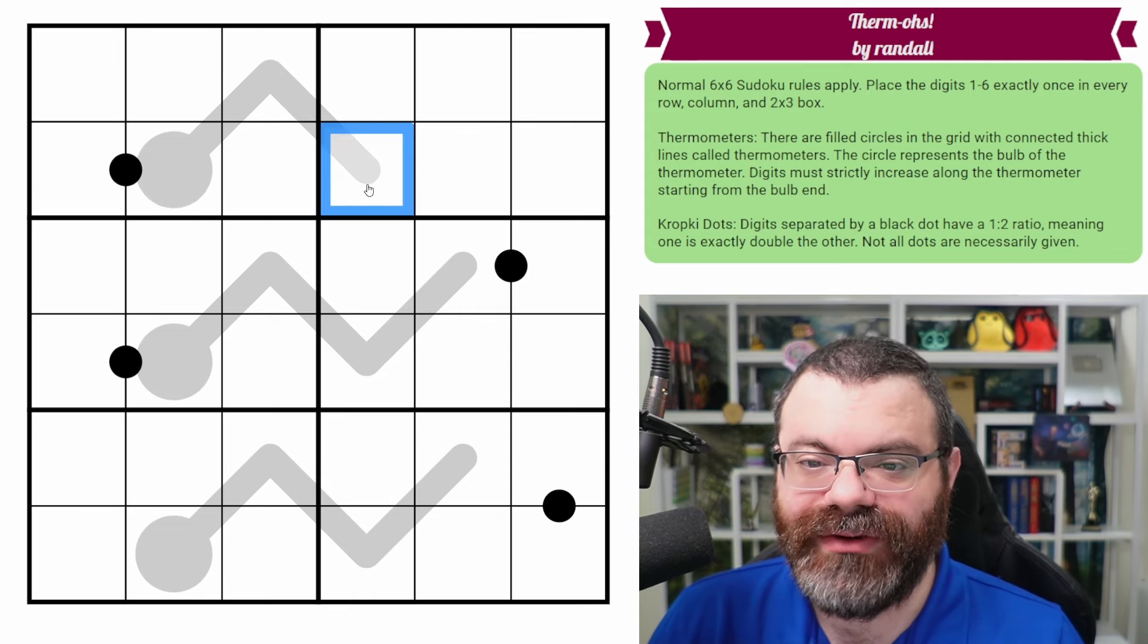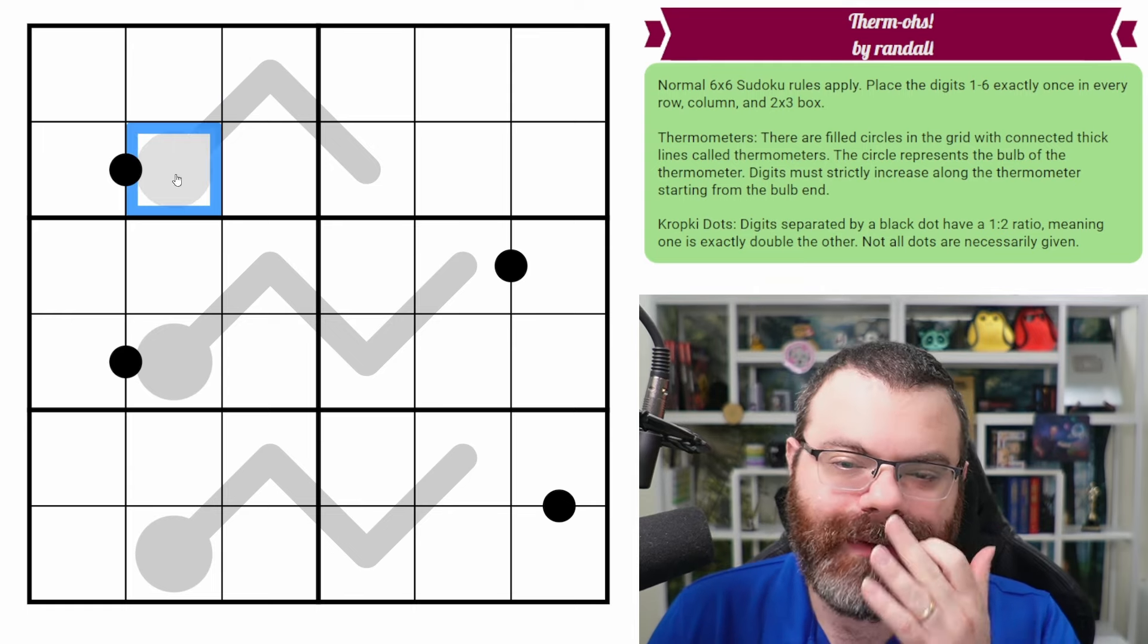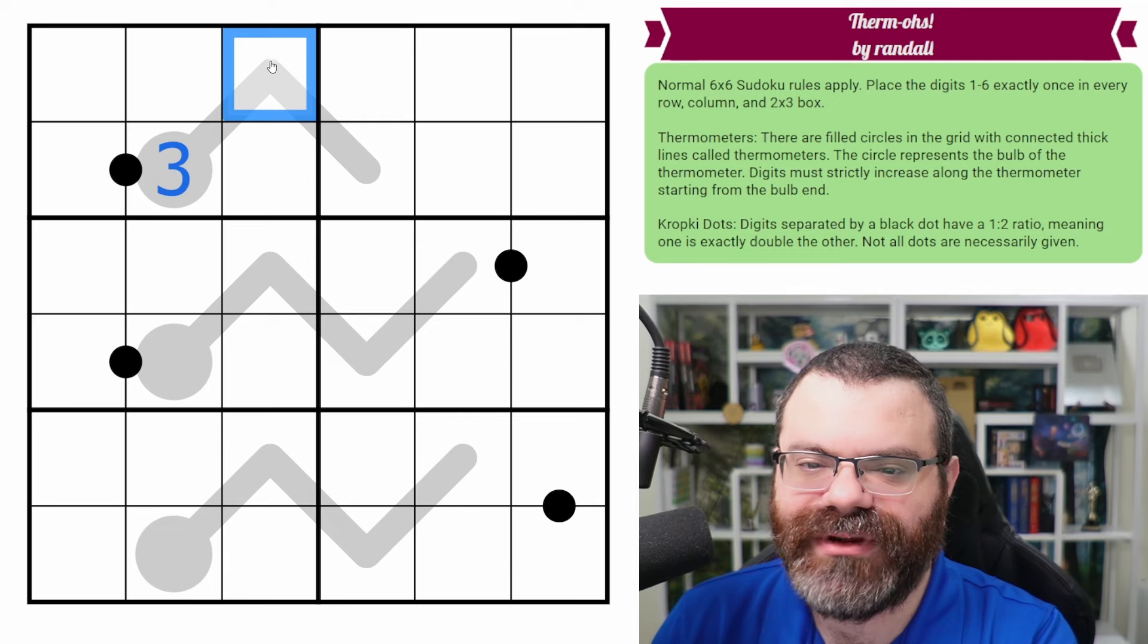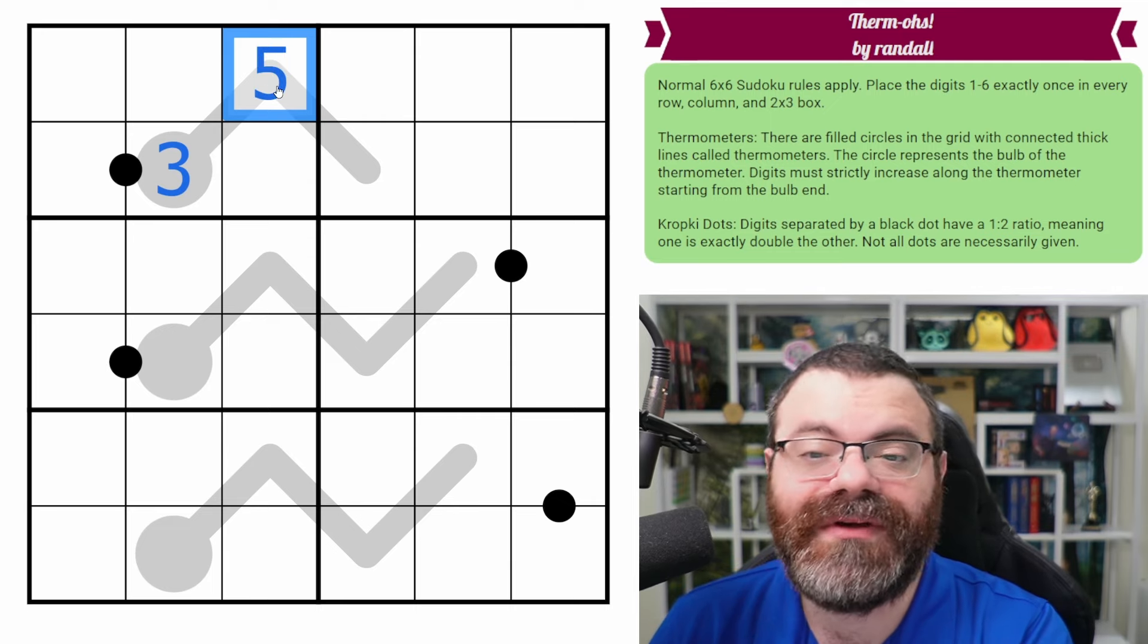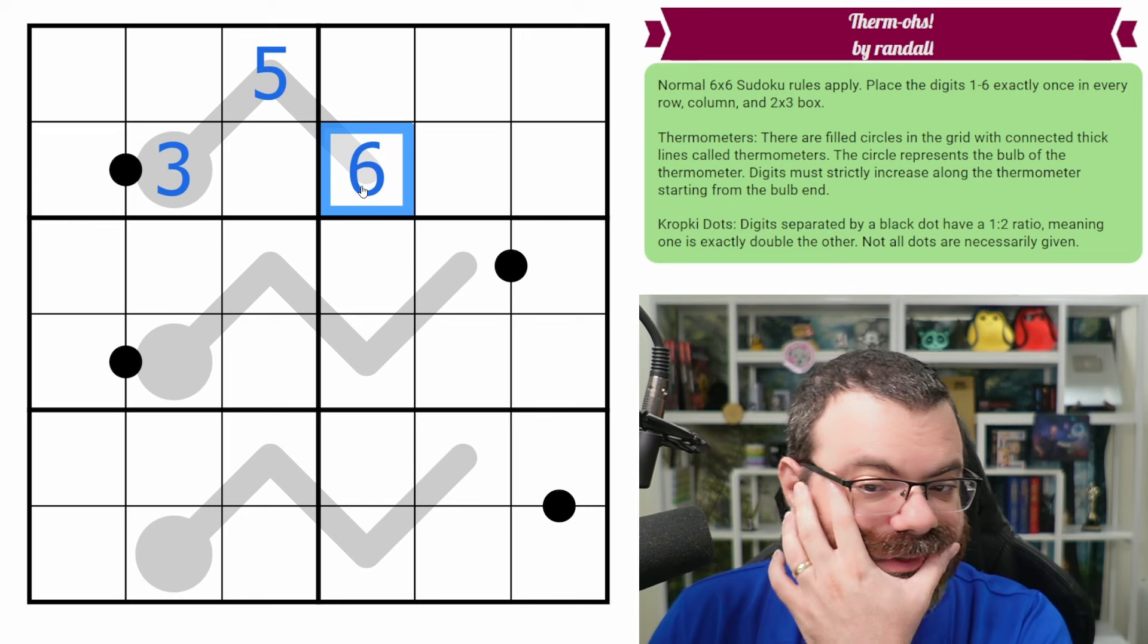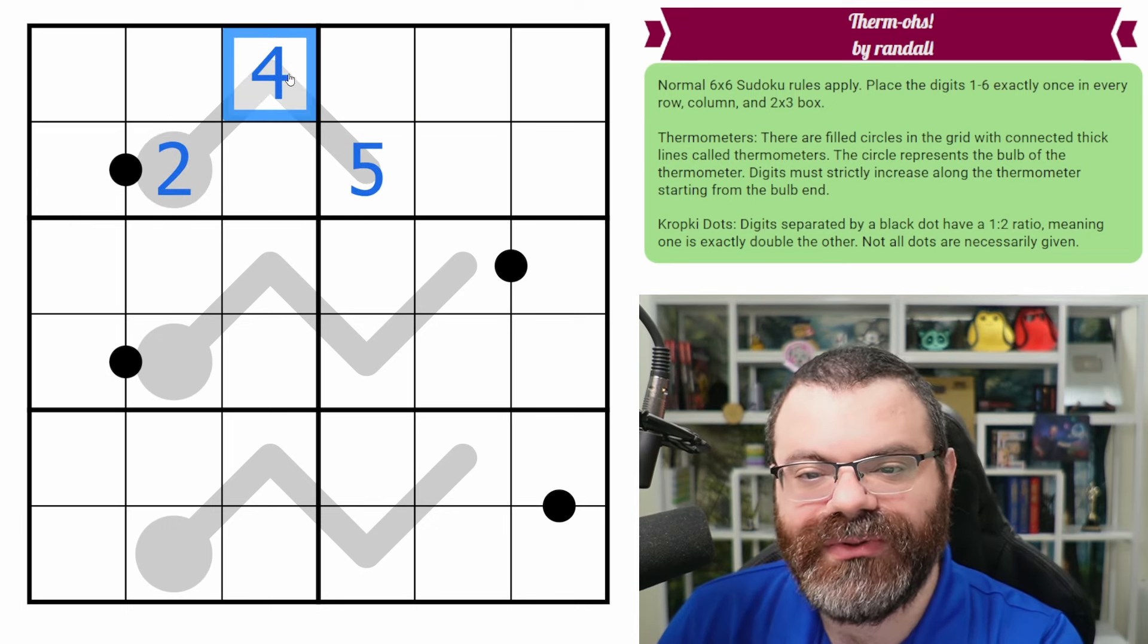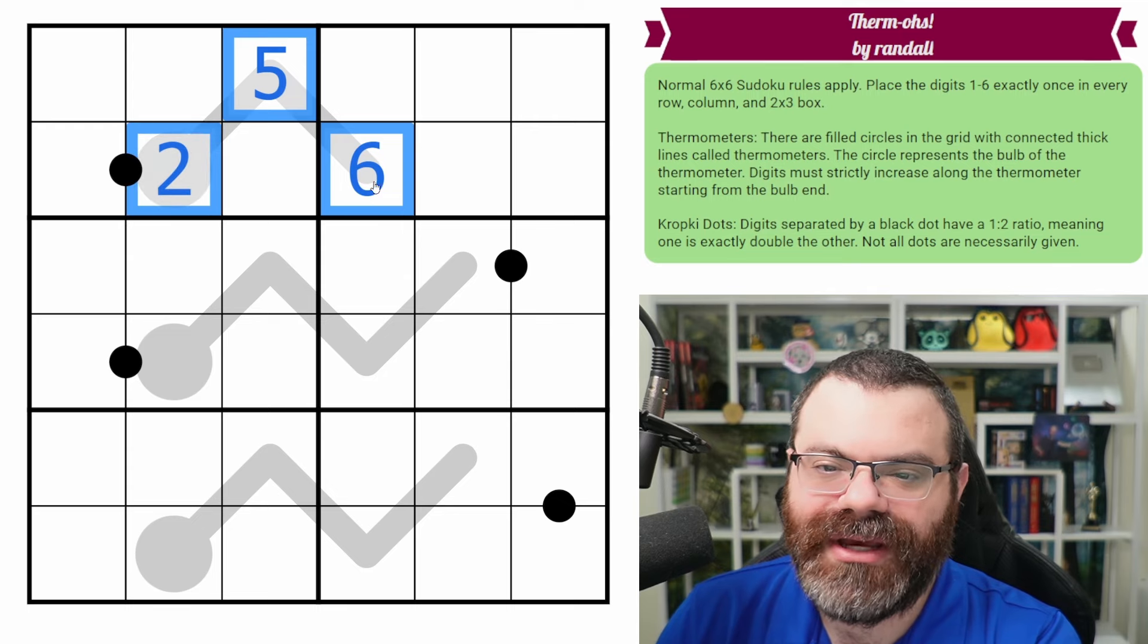We also have thermometers in the grid. Thermometers strictly increase from the bulb end. The bulb is the circle. So if this was say a three, this would have to be bigger than three. It doesn't have to be four, but it could be. It could be a five. And then this needs to be strictly bigger than five. So it would be forced to be six in this case, but we could also do three, four, six. We could do three, four, five. We could go two, five, six. You get it. They have to get bigger.